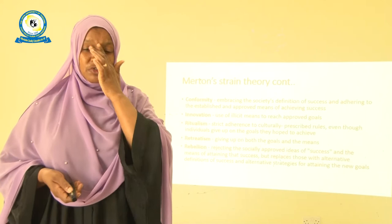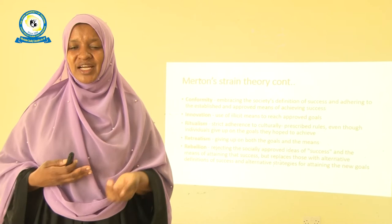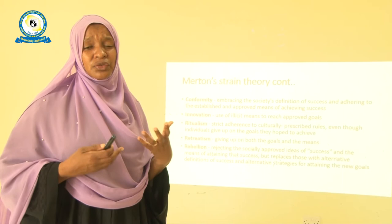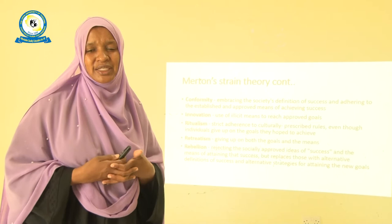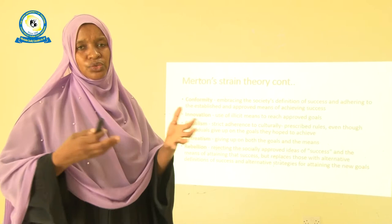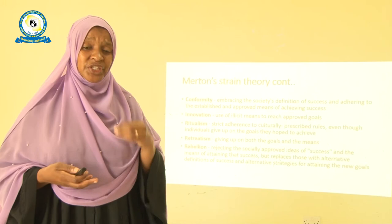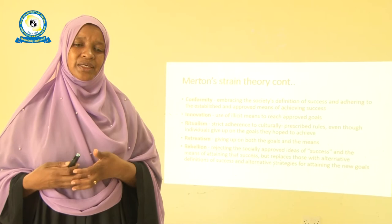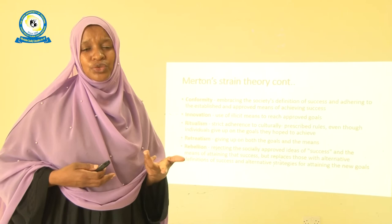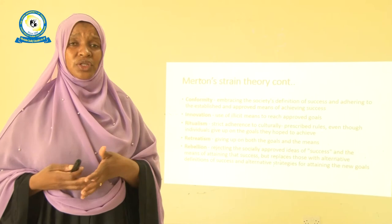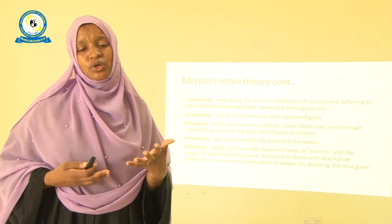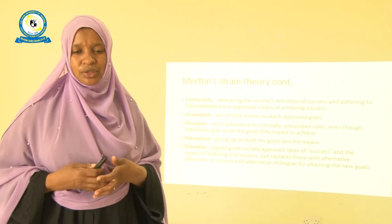When he talks about conformity, it means simply embracing what society defines as success. If you adhere to what society labels as success or how to achieve it, you have conformed. But sometimes we have innovation, and sometimes people use illegal means to achieve their goal. If the goal is economic success, people may use illegal means because they are interested in the goal and not the means toward reaching it. For ritualism, society has strict culturally prescribed rules, and even though some may not appeal to all individuals, some people stick to the rules and end up not achieving their dreams of economic success, giving up hope.